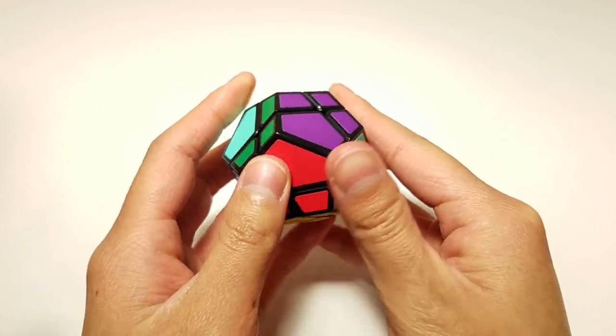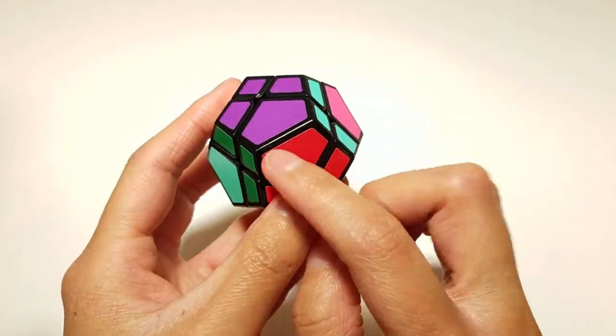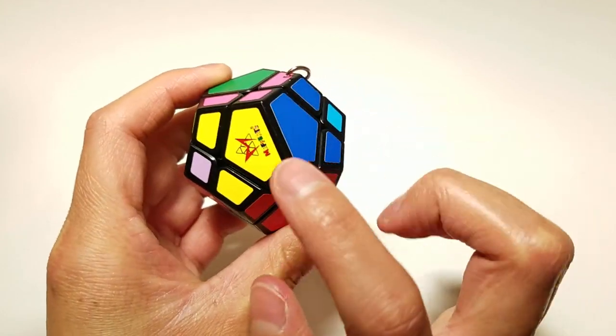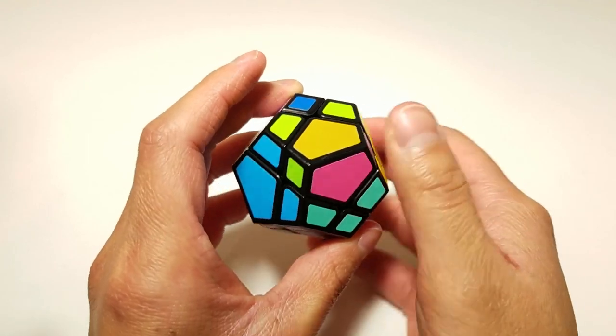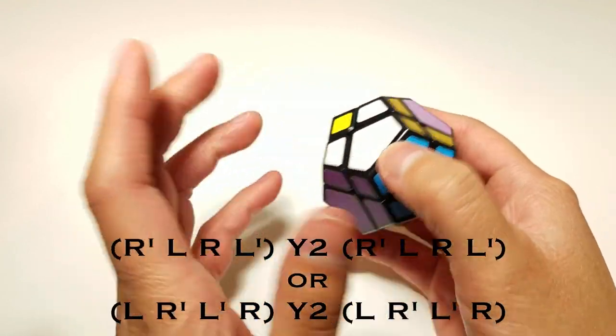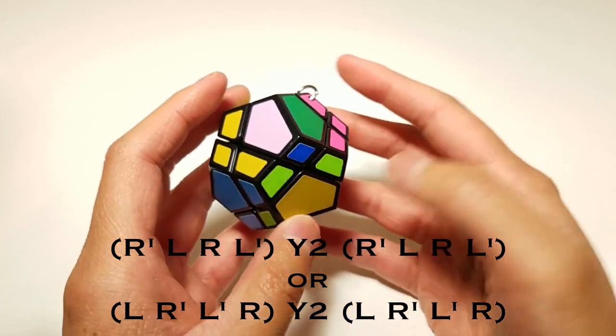So now for the remainder, we just want to keep this on the bottom and make sure we've got our original two centers on the sides. It doesn't really matter which way. And then just keep doing that algorithm just to kind of experiment and see where the pieces go.